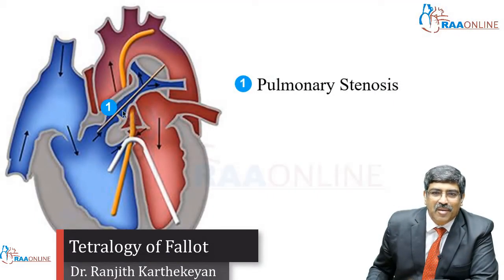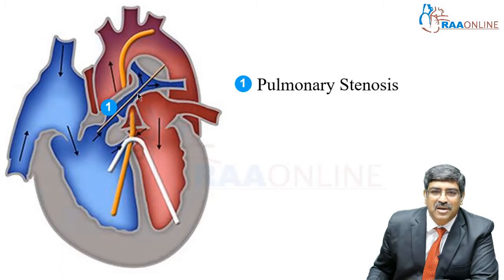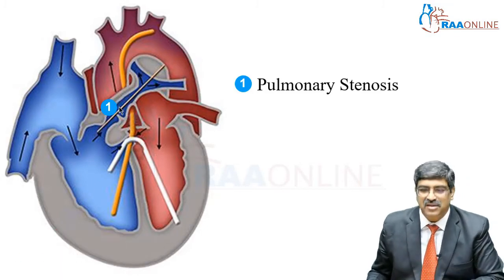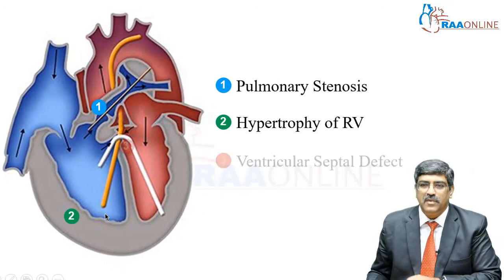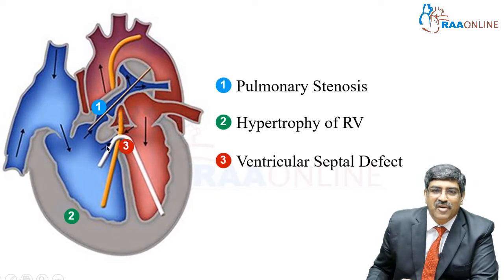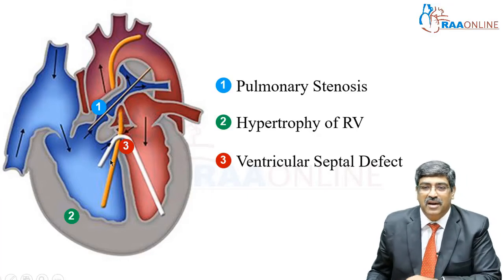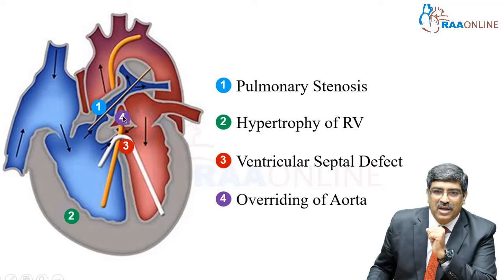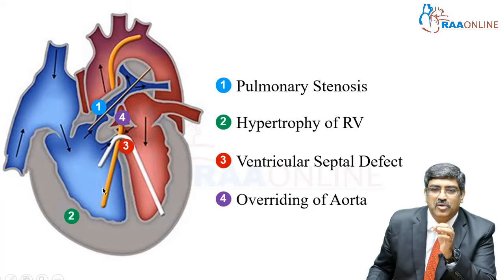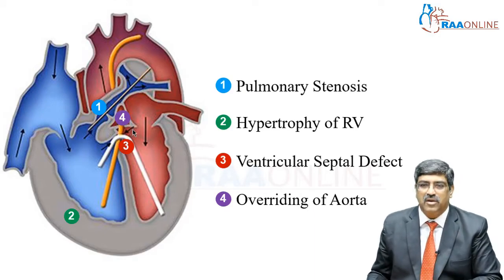The first component is pulmonary stenosis — the flow across the pulmonary valve is restricted. The second component is right ventricular hypertrophy, because the obstruction to flow causes the right ventricle to hypertrophy. The third abnormality is the ventricular septal defect — the defect between the right ventricle and the left ventricle. The fourth is the override of the aorta, which receives blood via the VSD from the right ventricle and also from the left ventricle. These are the four components of Tetralogy of Fallot.